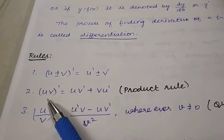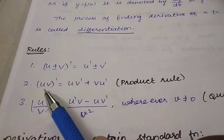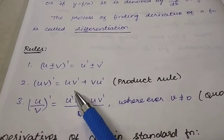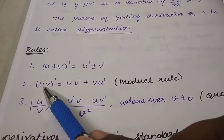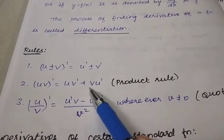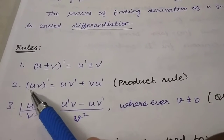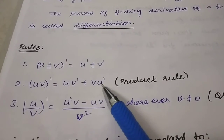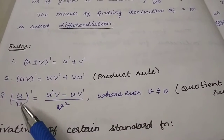If you want to find the derivative of the product of two functions, you use the product rule. The product rule is: (uv)' = u·v' + v·u'. That is, keep the first term as it is and differentiate the second, then keep the second term and differentiate the first.